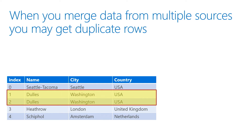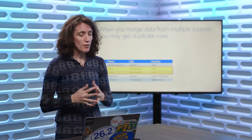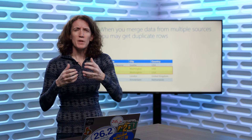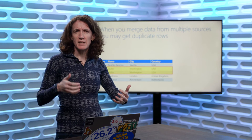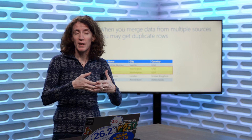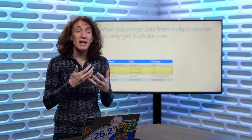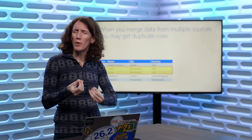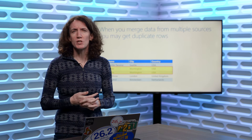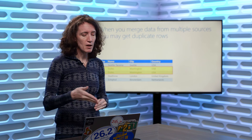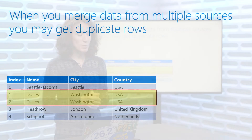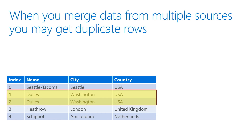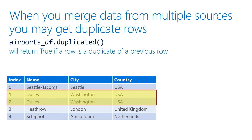The other scenario we might need to handle is duplicate rows. You'll often find that when working with data science, you'll be given files from multiple different places and then combine all those files together into one data frame. That may mean rows get loaded multiple times. We also want to handle those duplicate rows because they can skew results. Here I have some simple information about airports, but I have two rows for the airport in Dulles, Washington.